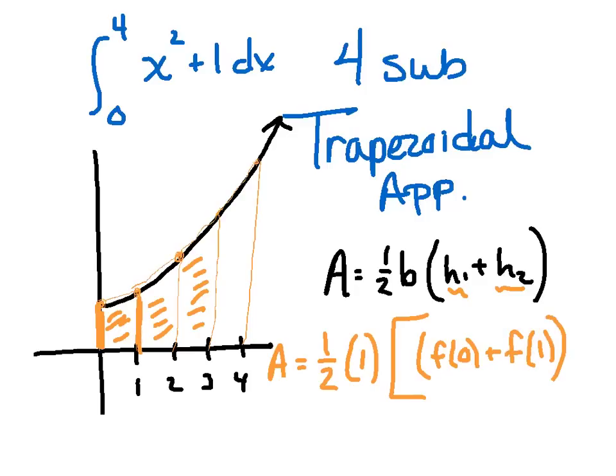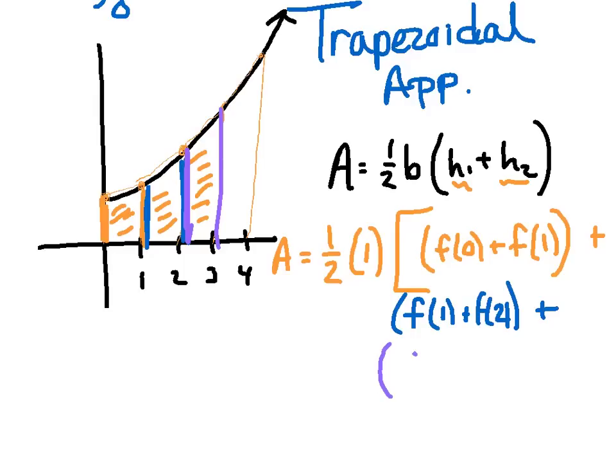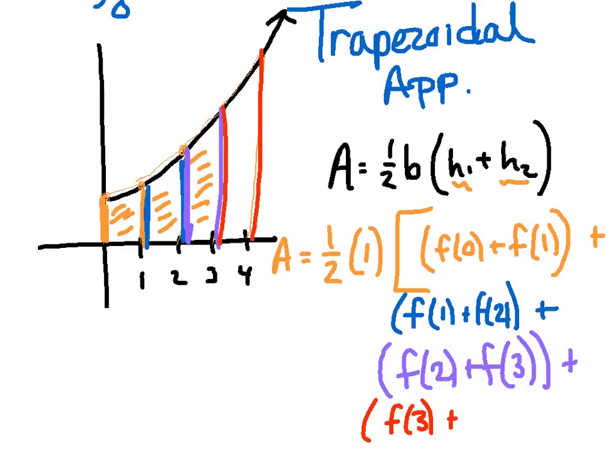Let's bracket those in separately, and then I'm going to add on to that the heights of this second trapezoid. One side is sitting on one as well, and its other side is on two, so I'm going to add on f of one plus f of two. Then I'll add on to that. My third trapezoid is on two and three. I'm going to add on f of two plus f of three. And my last trapezoid is using the heights of three and four, so I'll finally add on f of three plus f of four.